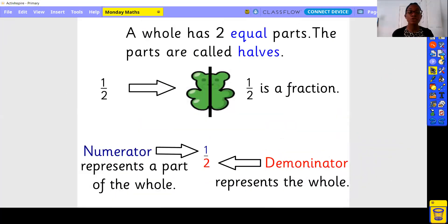A whole has two equal parts. The parts are called halves. You can see an annotation here with numbers which again you would have seen before half term when we talked about doubles and halves.